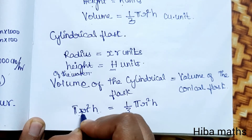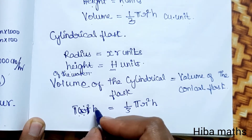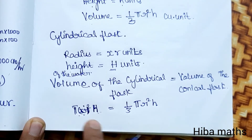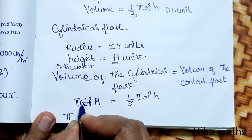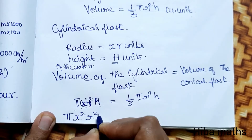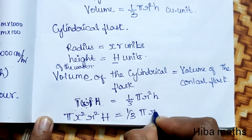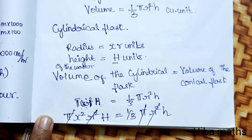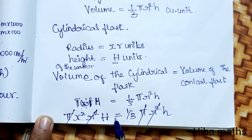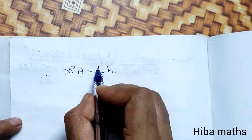Radius of cylindrical flask is x into R and height is capital H. Substituting into the formula: pi x squared r squared h is equal to 1 by 3 pi r squared H. Pi and pi cancel, r squared and r squared cancel, leaving x squared h equal to 1 by 3 H.